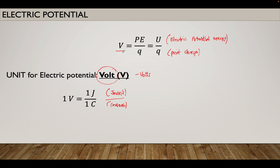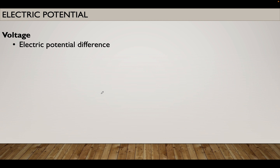Because the formula for electric potential is electric potential energy divided by Q, the unit for potential energy or energy and work is in terms of joule, whereas the unit for point charge is coulomb. That's why one volt is equal to one joule per coulomb. So remember, the unit for electric potential is in terms of volt or volts.